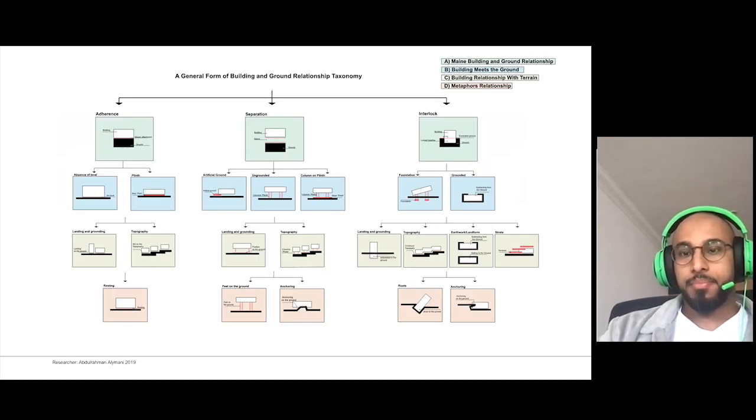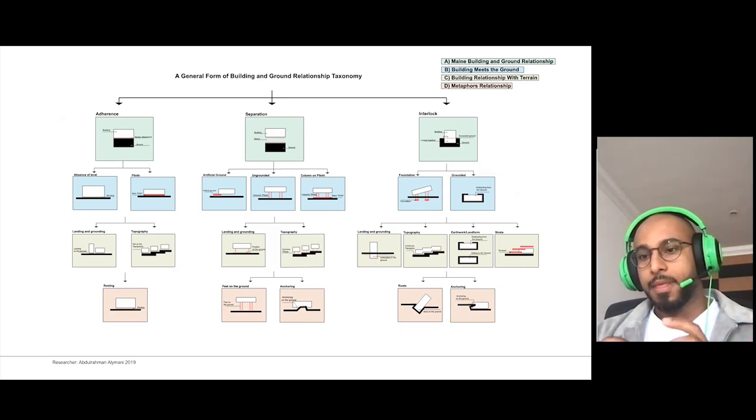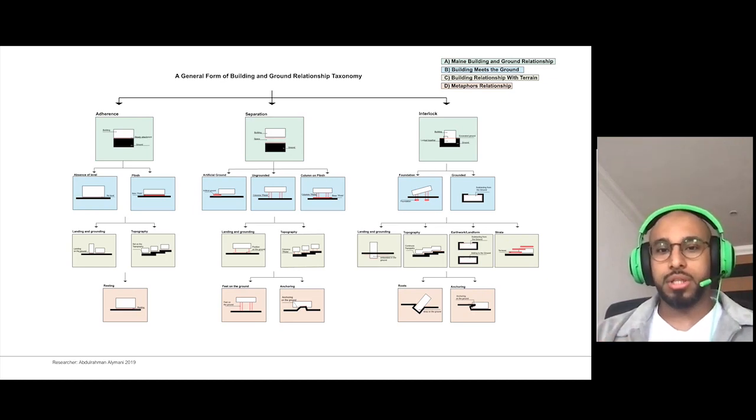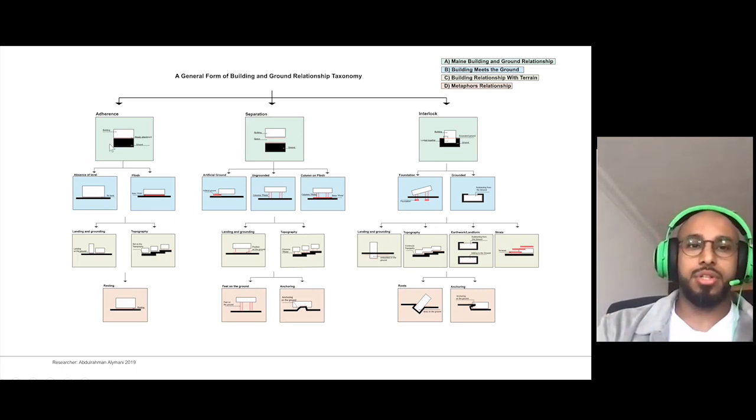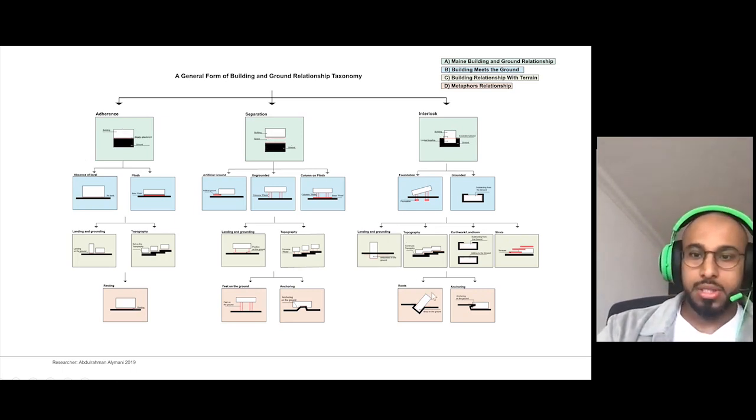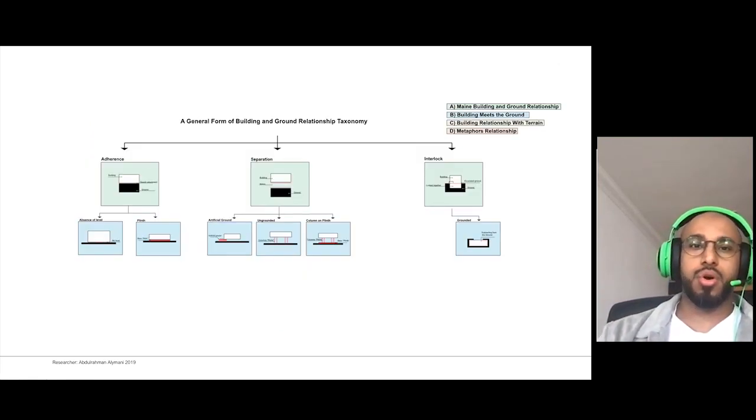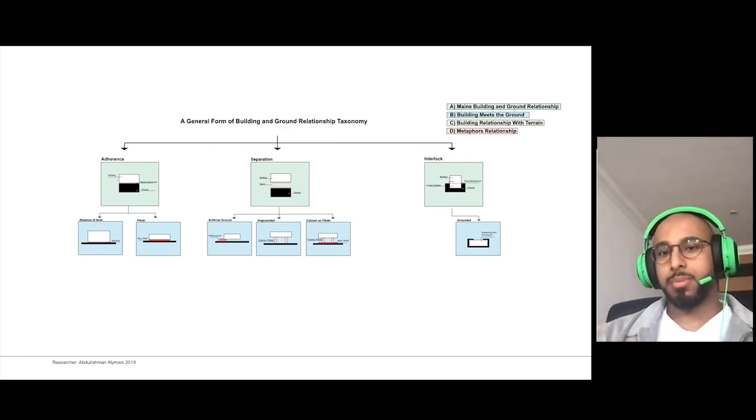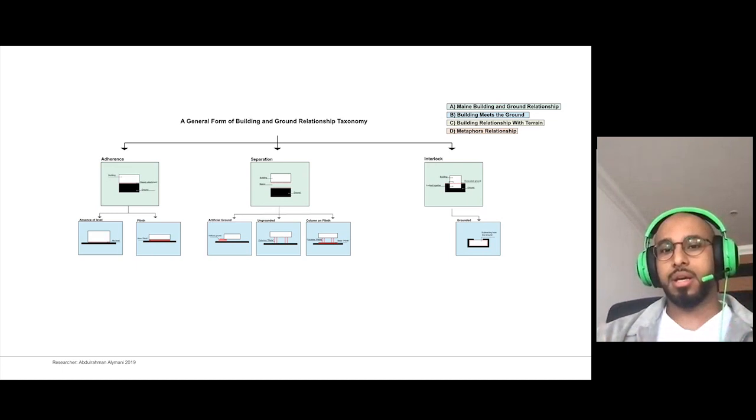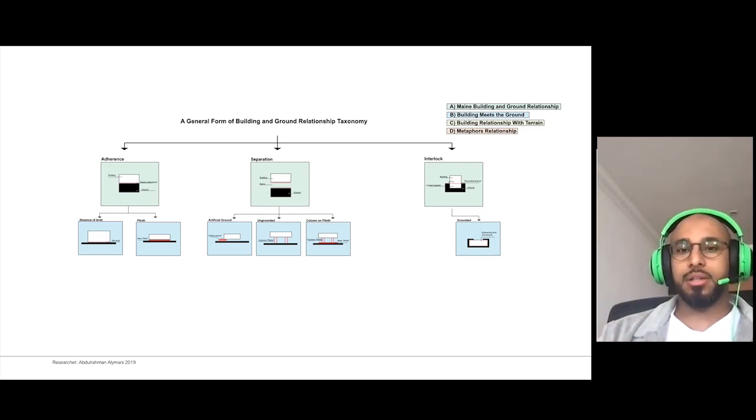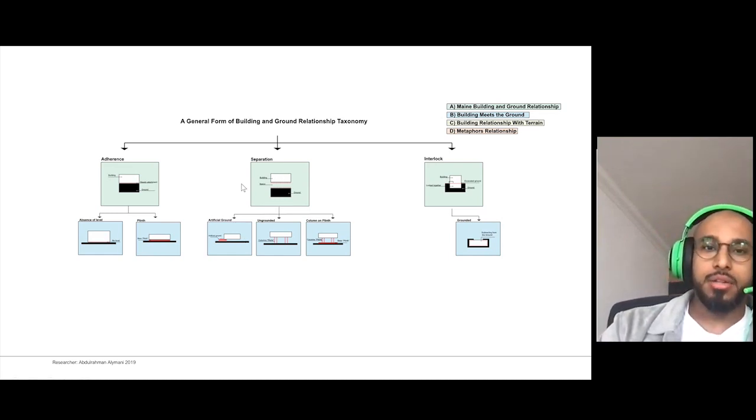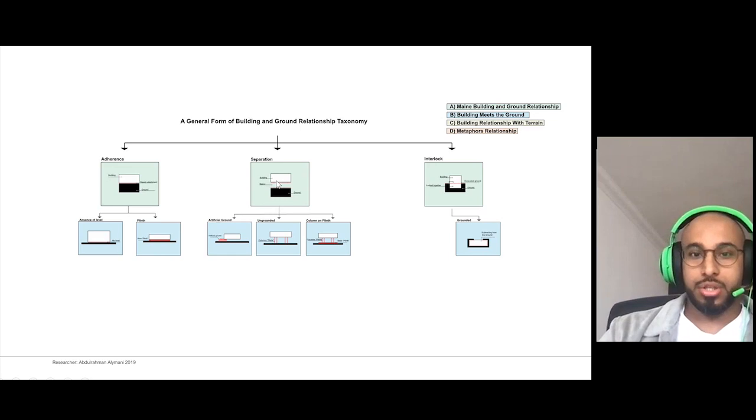In my literature review, I tried to diagram and capture all the relationships between building and ground. And we found that there are three main relationships between building and ground, which are adherence, separation, and interlock. And all these other forms of the relation fit into one of these large or main building-ground relationships. We focus in this paper, and also in my dissertation, on the three main relationships and one detailed relationship which is still underneath the main relationship.